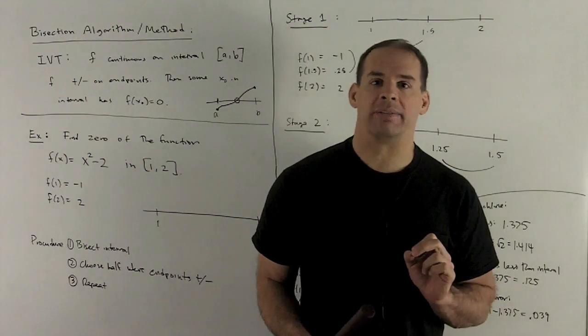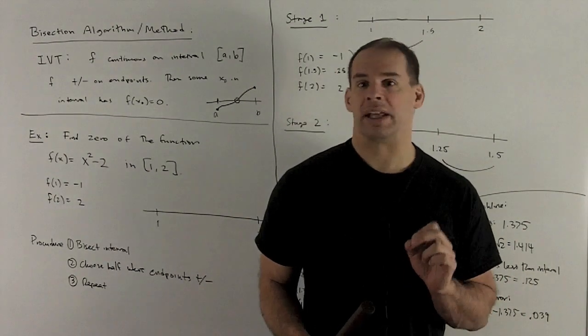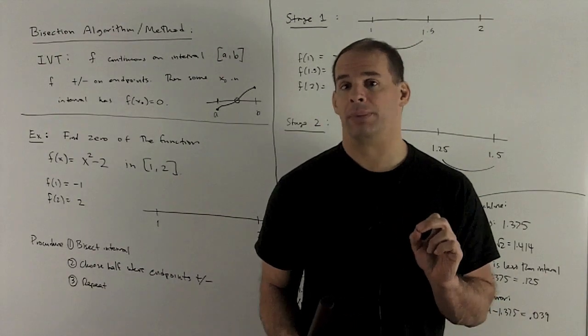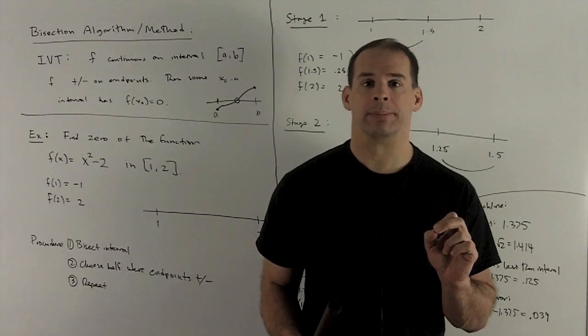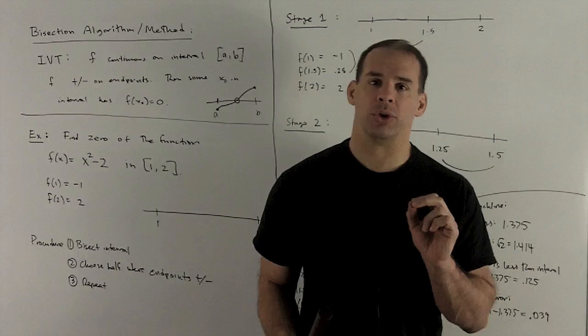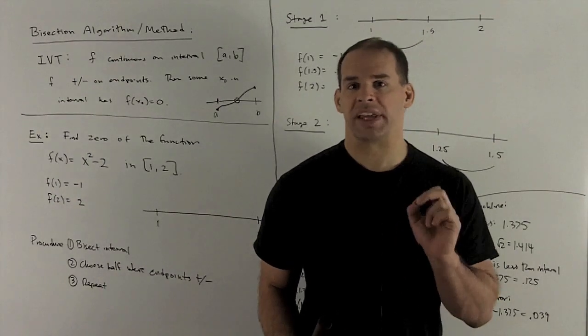Now, what's not so great about the Intermediate Value Theorem is it gives you no idea how to actually go about finding that 0. So what we're going to use here is what's called the bisection method, or the bisection algorithm. If you take introductory computer language courses, you're usually forced to program this. So let's see how this is going to work.